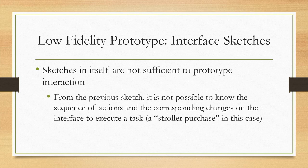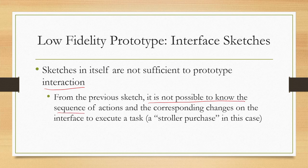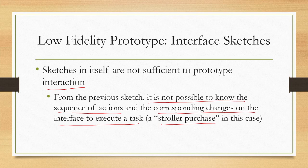Sketches in themselves are not sufficient to prototype interaction, because they are primarily used for horizontal prototyping — primarily to get feedback on the look and feel of the interface. In the example, if we create a sketch of the interface, it is not possible to know the sequence of actions and the corresponding changes on the interface to execute a task such as a stroller purchase. That type of information requires something more.